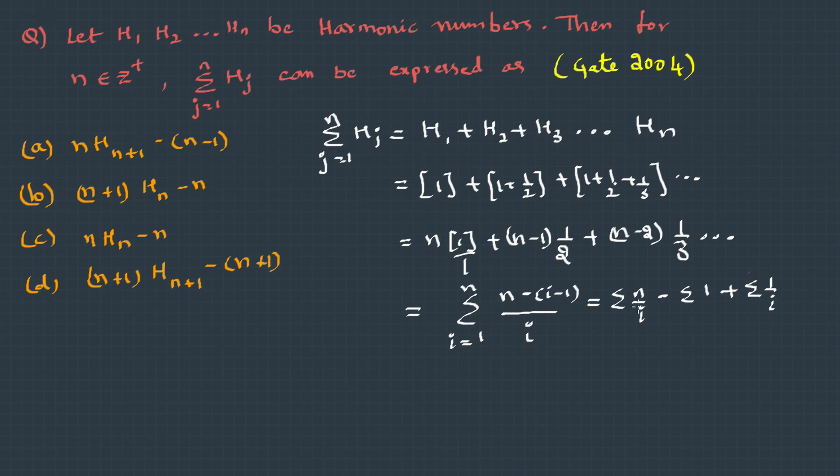Now if you look at this, these two terms are the same—here we have n times 1/i. So when we combine these two, we can write this as (n+1) times Sigma(1/i), and what is Sigma 1 for n times? 1+1+1... n times is nothing but n, so it becomes minus n.